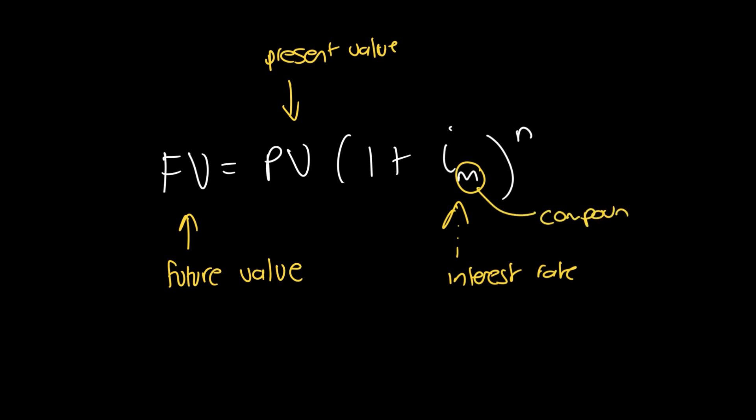so if it's monthly, that would be 12, if it's daily, 365, and so on, and the n is the duration.